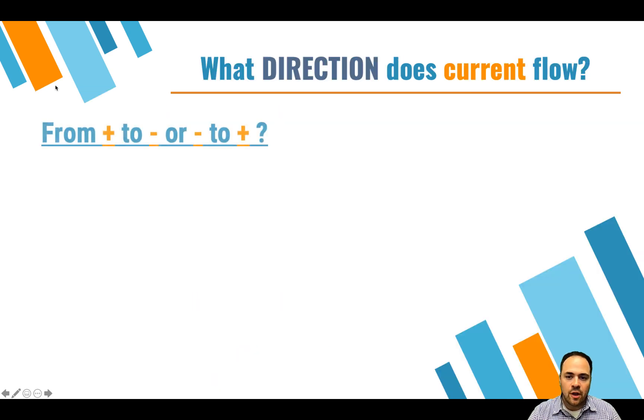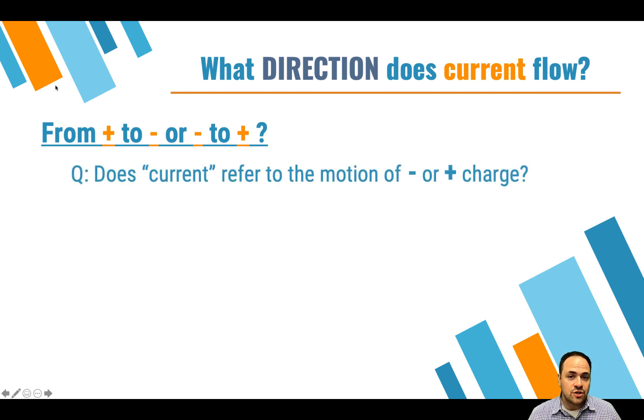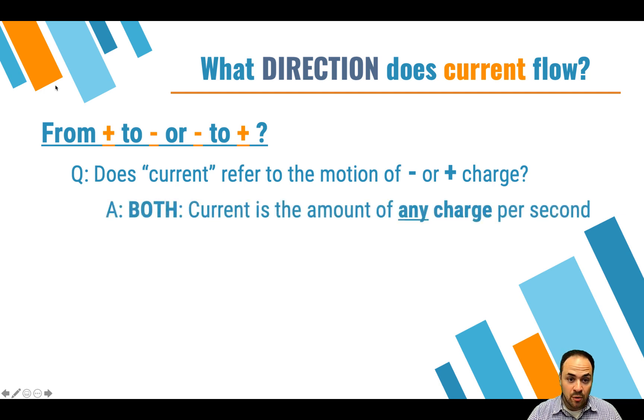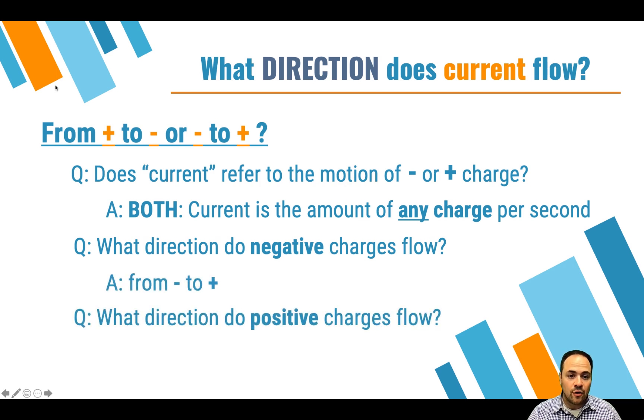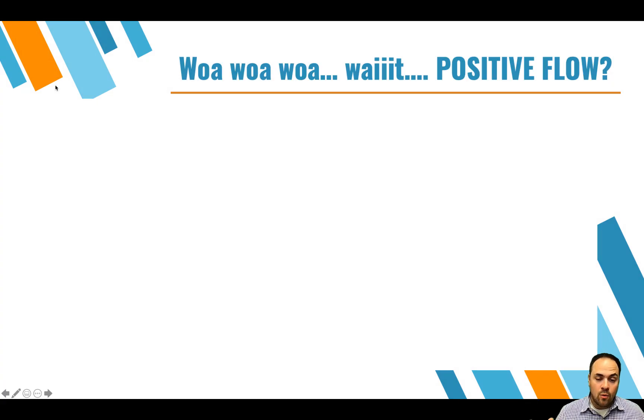Now, what direction does current flow? Does it flow from positive to negative or negative to positive? Does current refer to the motion of negative charge or positive charge? And you might be a little surprised that it's actually both. Current is referring to the movement of any charge per second. And so when we're talking negative charges, negative charges flow from negative to positive. But when we're talking positive charges, those flow from positive to negative. Now, you're probably thinking, whoa, whoa, whoa, Mr. White, you just spent the entire last unit telling us that positive charges don't flow. Yeah, let's talk a little history.